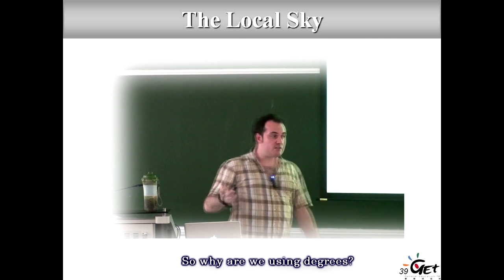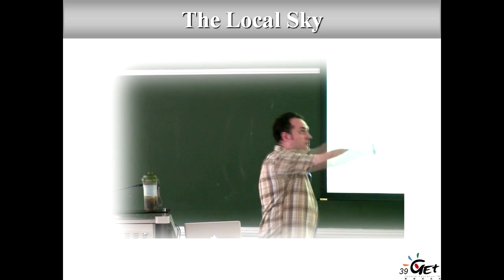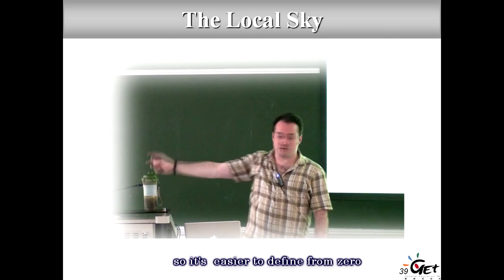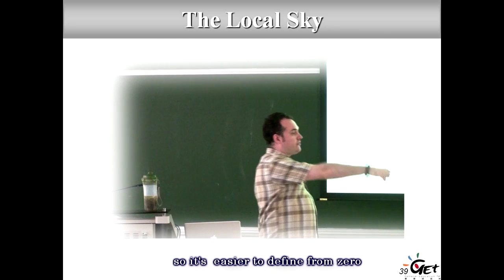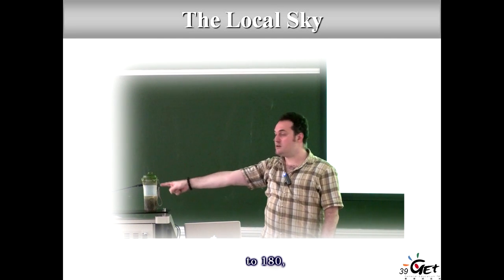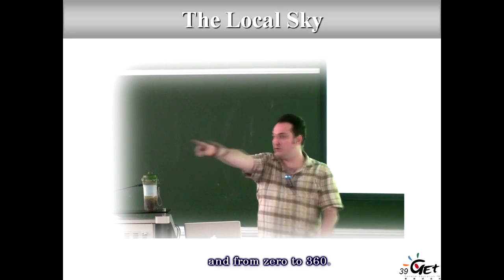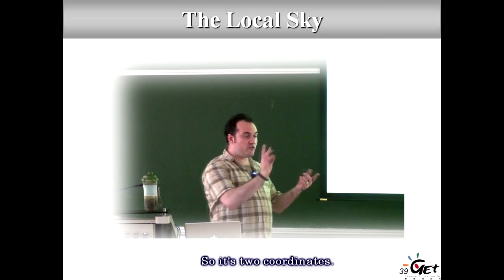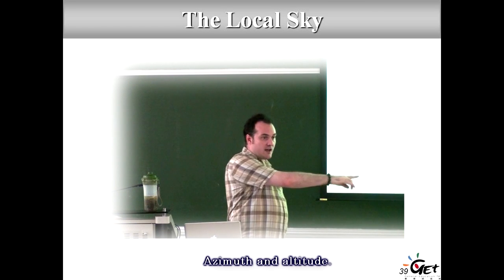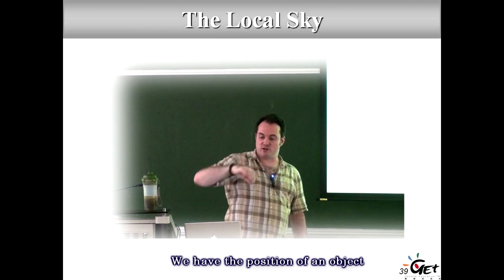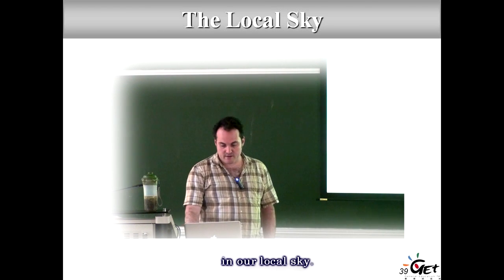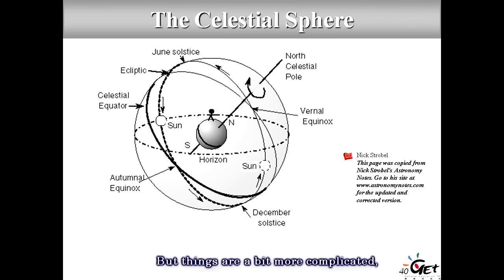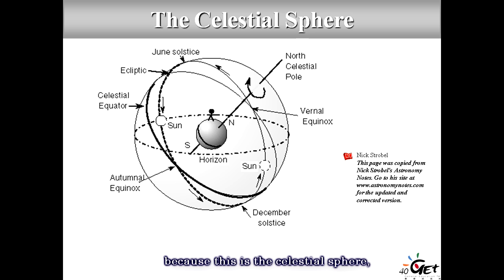We use degrees because it's easier and circular — 0 to 360 for azimuth and 0 to 180 for altitude. With two coordinates — azimuth and altitude — we have the position of an object in our local sky.